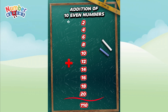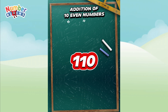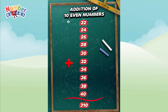Now join me and let's try addition of 10 even numbers! 2 plus 4 is equal to 6. 6 plus 6 is equal to 12. 12 plus 8 is equal to 20. 20 plus 10 is equal to 30. 30 plus 12 is equal to 42. 42 plus 14 is equal to 56. 56 plus 16 is equal to 72. 72 plus 18 is equal to 90. 90 plus 20 is equal to 110.